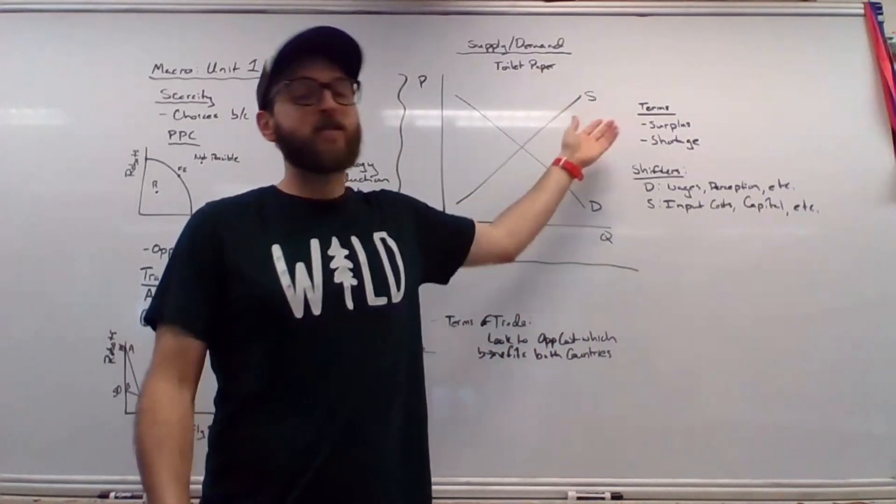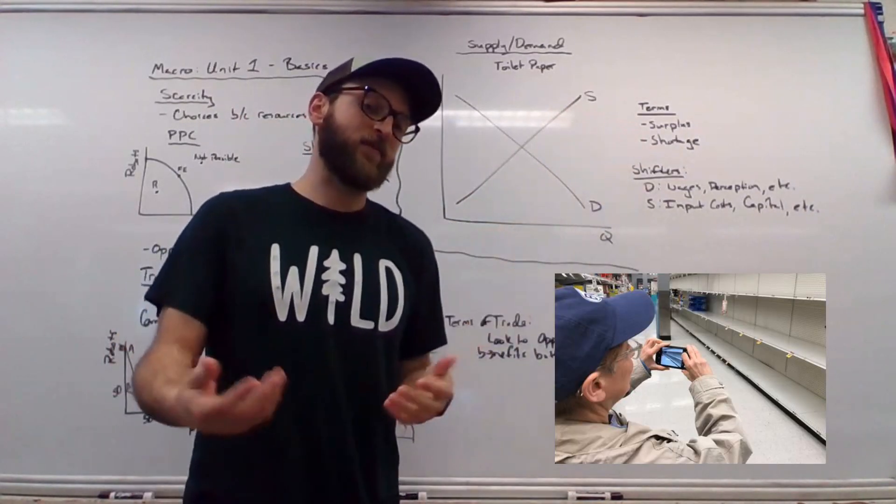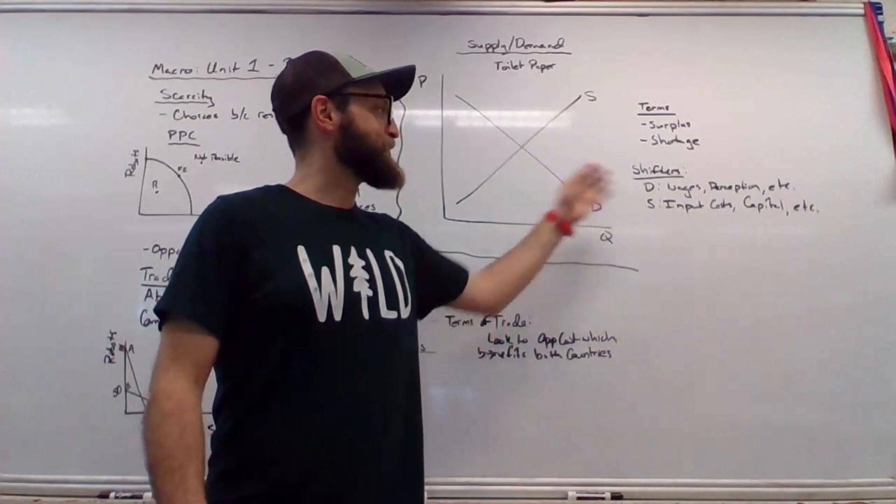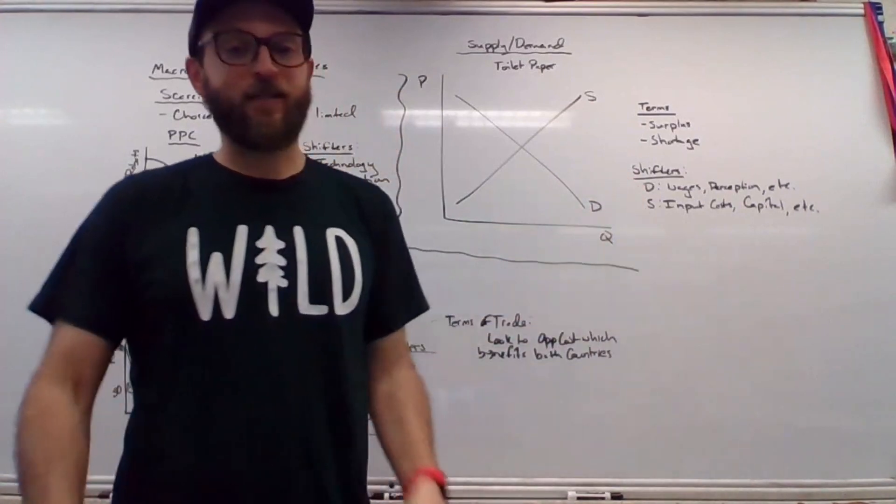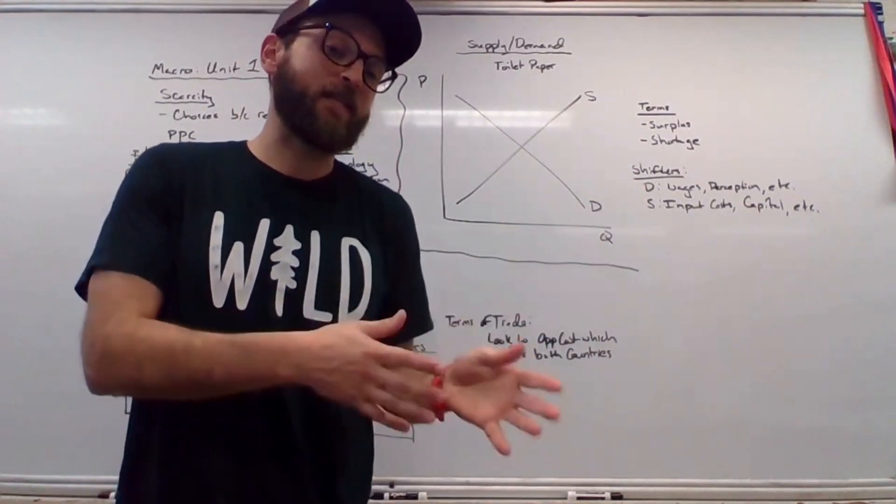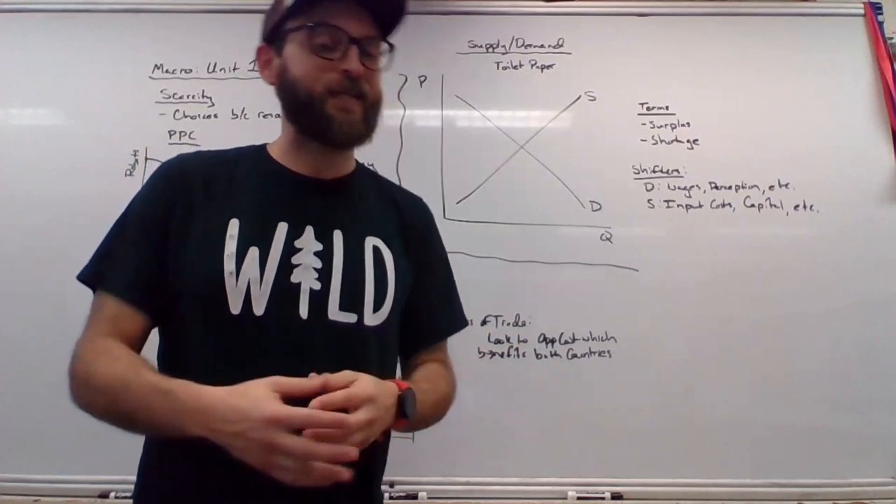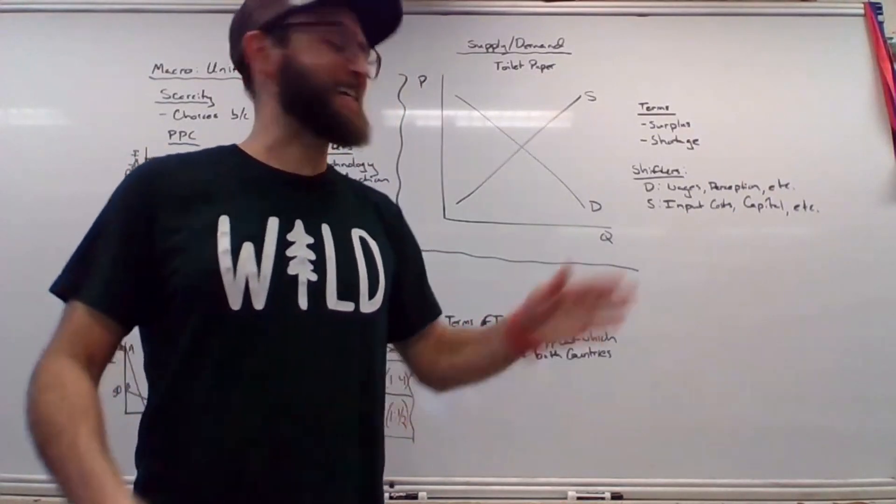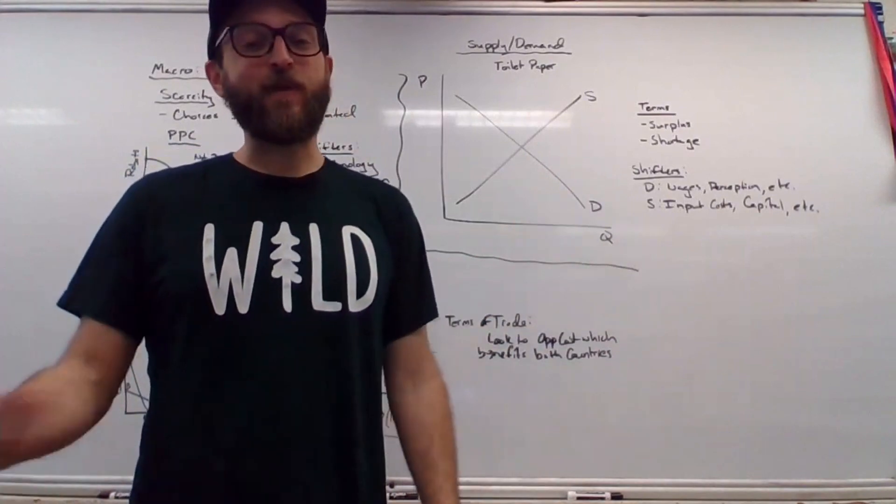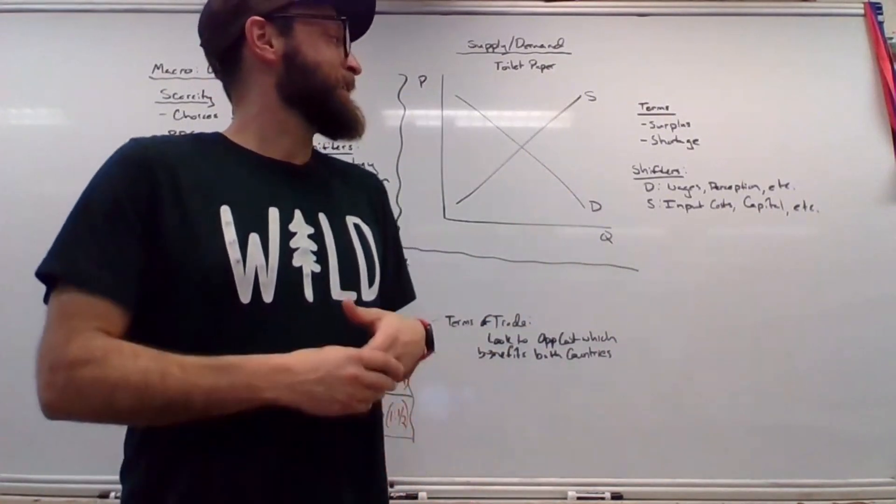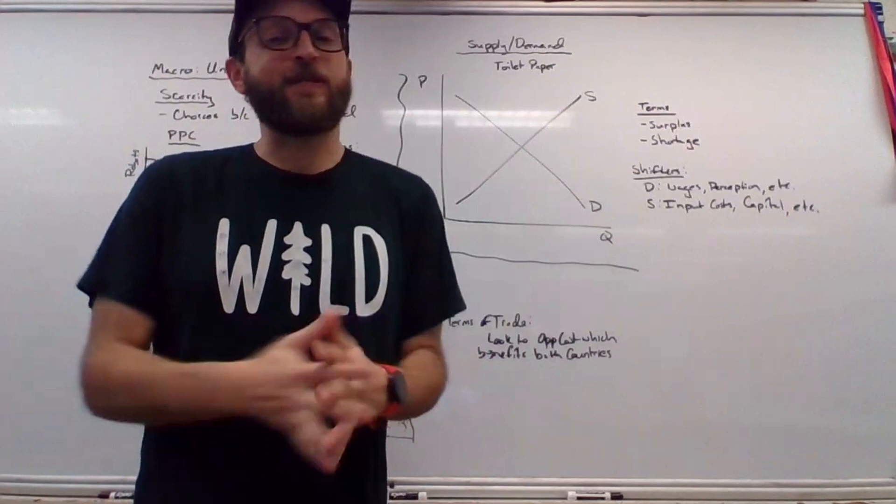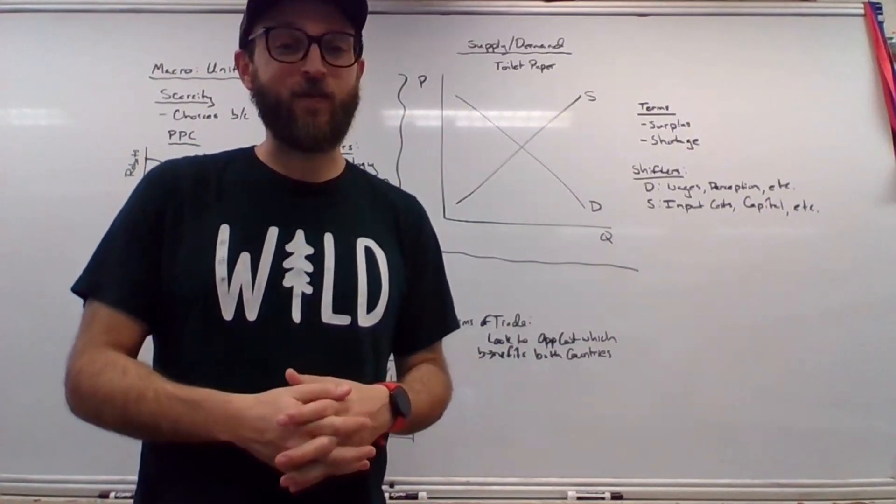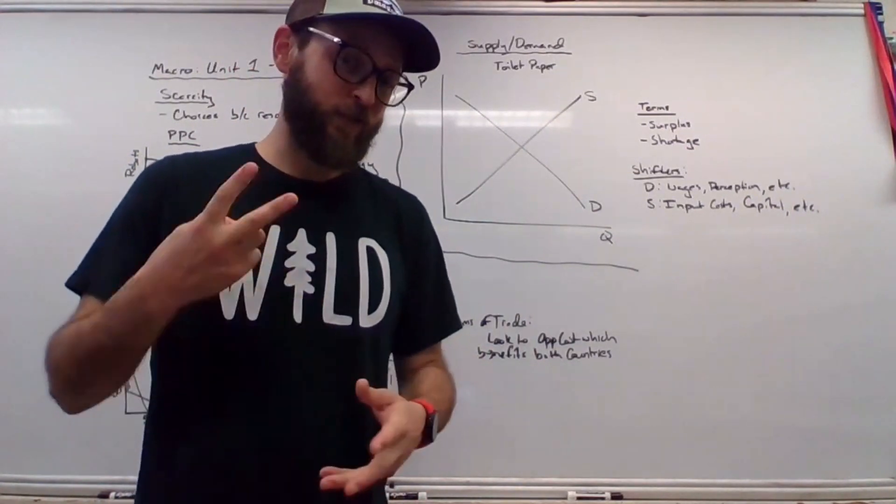Common terms would be surplus—we have too much—and shortage—we don't have enough. That's today, by the way. And then finally, shifters are exactly like what you would expect. The more money you have, the more you're going to demand something. If you perceive you need it because you're going to be locked down for three months, then the demand would rise as well. Supply shifters would be input costs, capital, labor, resources—the standard usual suspects. Hope you guys have a wonderful Monday and deuces.